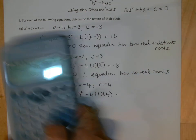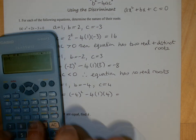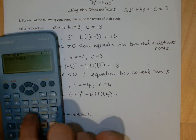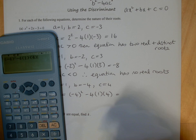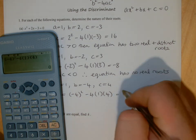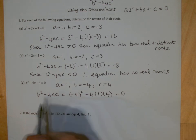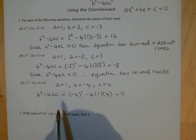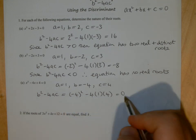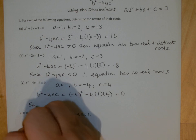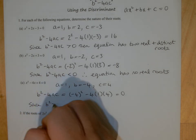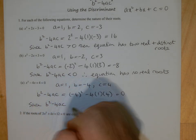So if I work that out, I get 0. So in this case, the discriminant—and remember, we call this value the discriminant, b squared minus 4ac is given that name. In this case, it's 0, so when it comes out to be 0, we get a repeated root, or equal roots.